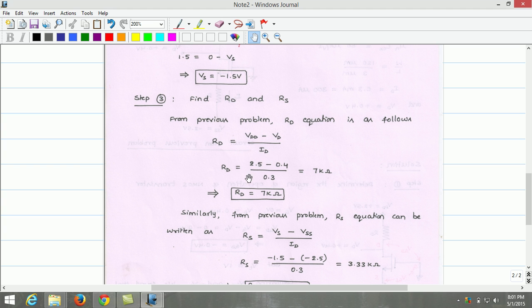Vd and Id, the Rd is found to be 7kΩ. Similarly, from the previous problem, the Rs equation can be written as Rs equals Vs minus VSS divided by Id.